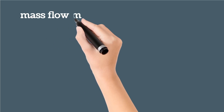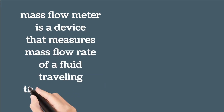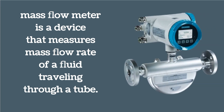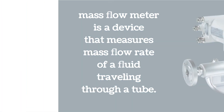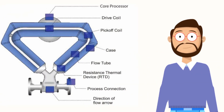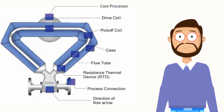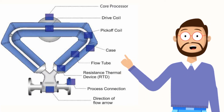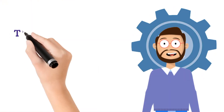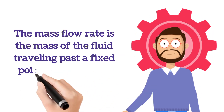Mass flow meter measures the mass flow rate of a fluid traveling through a tube. As shown in the image, mass flow meter has tubes and measures the mass flow rate of the fluid traveling through them. Mass flow rate is the mass of a fluid traveling through a fixed point in a unit time.